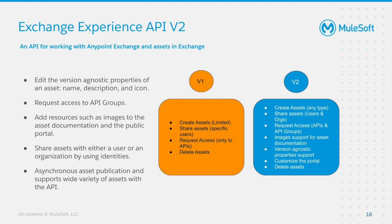You can now customize the portal with a logo, hero image, and a favicon. Identities are a concept in Exchange v2 APIs used to refer to any entity such as an organization — including both master and external org — and the end users with whom you are sharing an asset. For assets that are large in size, it may take a while for the publishing to complete. The v2 API supports async publications now, so the automation process can move on to the next step.